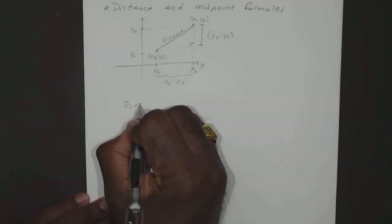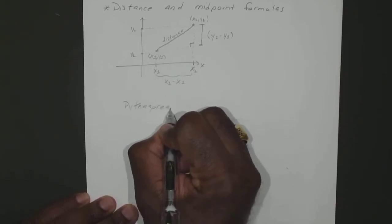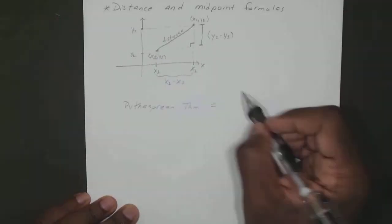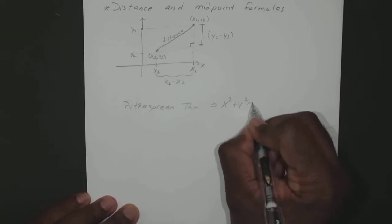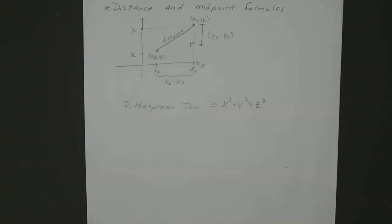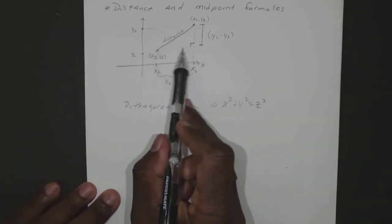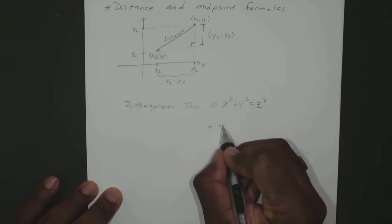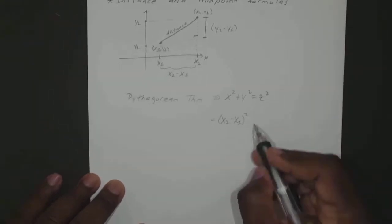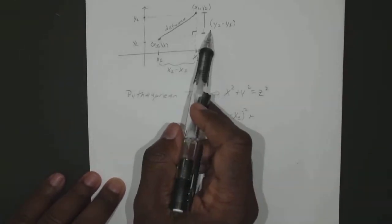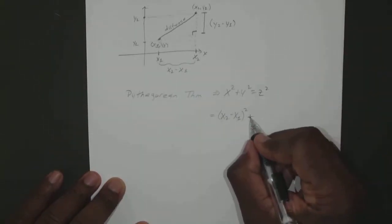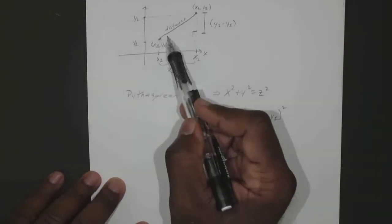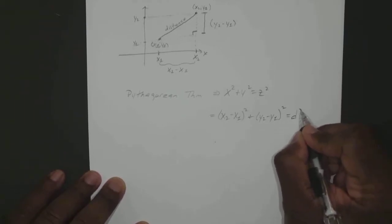So if we use our Pythagorean theorem, which says that x squared plus y squared equals z squared — or you can use a, b, and c, whichever one — our x, remember, that's just x2 minus x1. So that's x2 minus x1, quantity squared, plus our y, remember that's just y2 minus y1, quantity squared, equals z squared. And our z is just the distance, so we'll call that d squared.